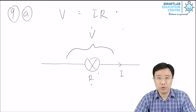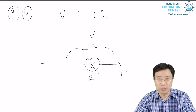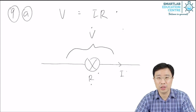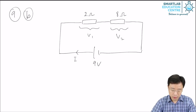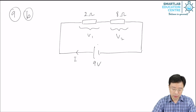Now I'll show you two examples on how to apply this formula to the entire circuit and to individual circuit components. In example 1B, we see a circuit consisting of a 9-volt electric cell, a 2-ohm resistor, and an 8-ohm resistor.